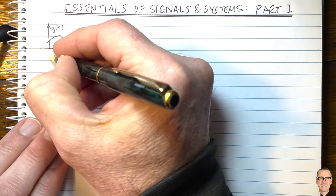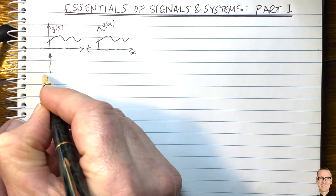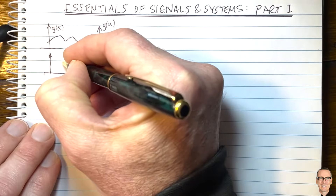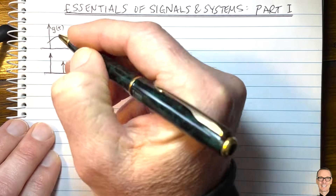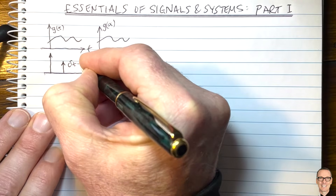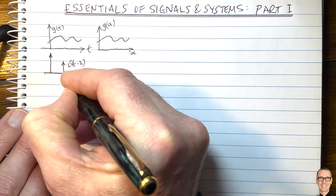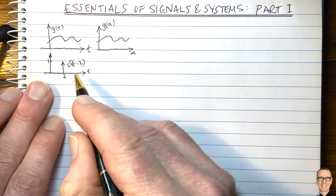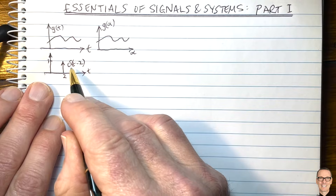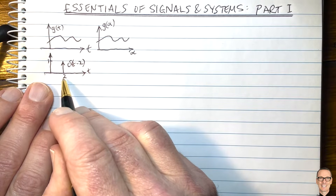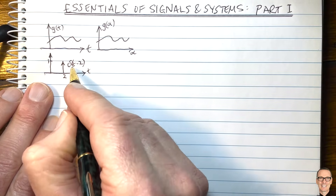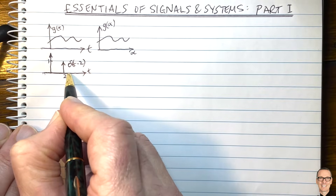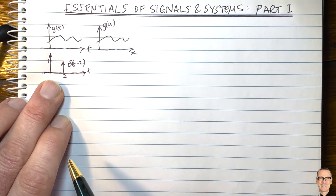Let's look at a very specific function: the delta function — that's another essential element. I'm going to draw delta of t minus 2 here. It's at time 2 and has an area equal to 1. This function is not just the spike at 2; it is a function over all time. It equals zero everywhere else, and it's important not to forget about that.